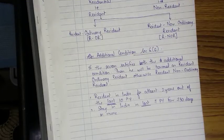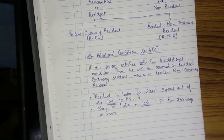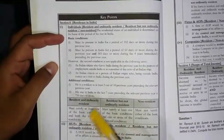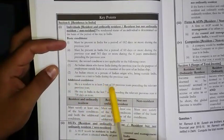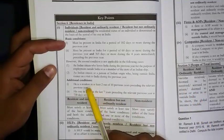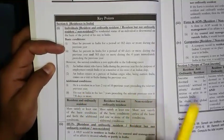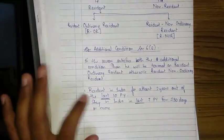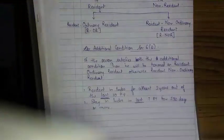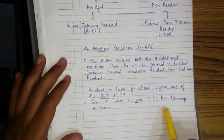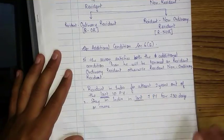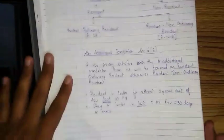The second additional condition is: stay in India in the last 7 previous years for 730 days or more. Please note: in the module, the additional conditions are given in a complicated manner — 'resident in at least two out of the 10 previous years preceding the relevant previous year.' This is a confusing statement, but if you write this statement it will do. Now I will illustrate a sum to make you understand it better.